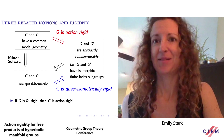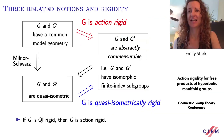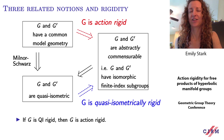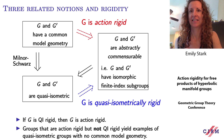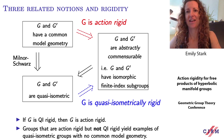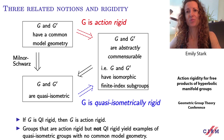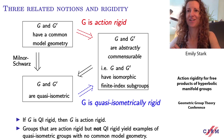Note that by Milnor-Schwartz, if a group G is quasi-isometrically rigid, then that implies the group G is action-rigid. The converse is not true. We're interested in families of groups that are action-rigid but are not quasi-isometrically rigid, because these give examples of quasi-isometric groups that have no common model geometry — groups for which the converse to the Milnor-Schwartz lemma must fail.